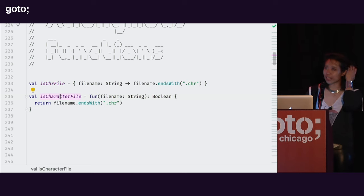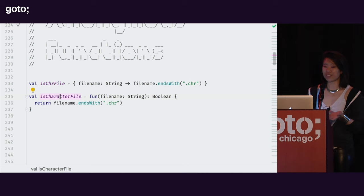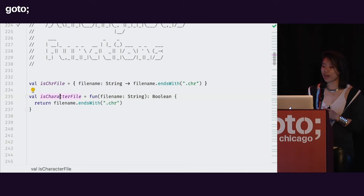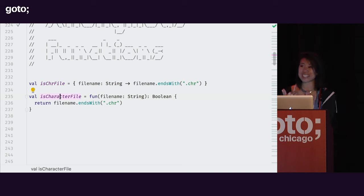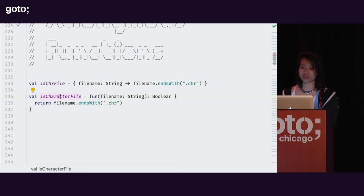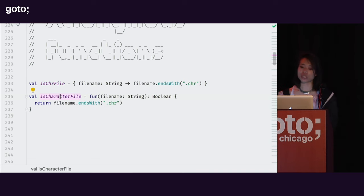To be honest, in my two and a half years of using Kotlin I have never ever used an anonymous function at work. I'm sure there's a really good reason to use one — I just haven't encountered it. So if you have an idea for when you would use an anonymous function versus a lambda, please let me know — I'm super interested.